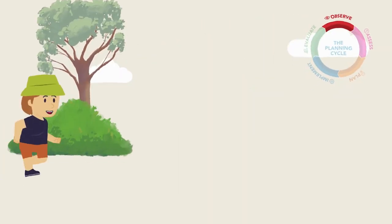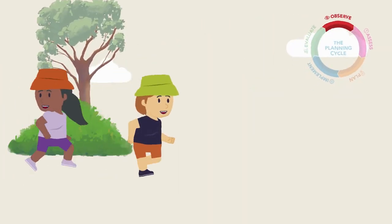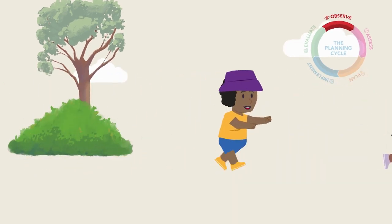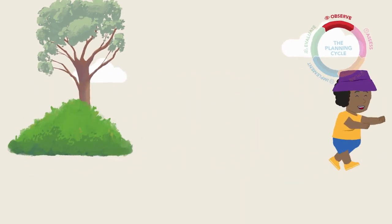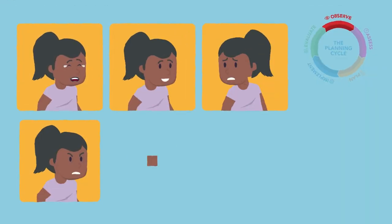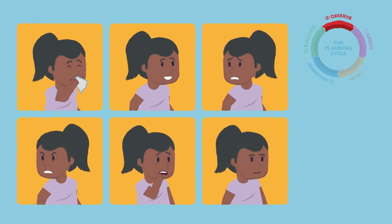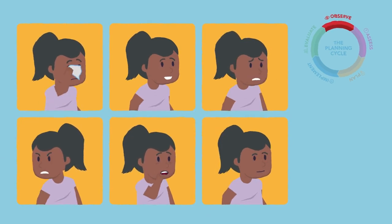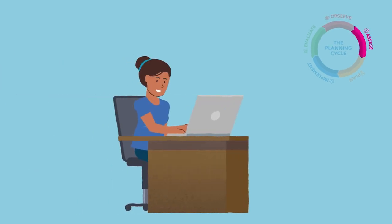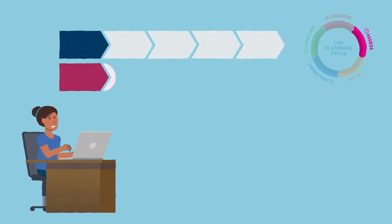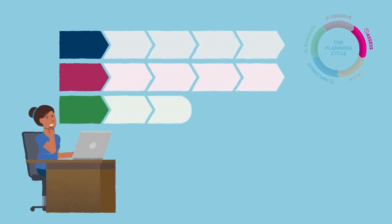An educator or teacher observes a child's emotional responses during play over the course of a week. They observe that the child shows a wide range of emotions and is starting to describe and express their feelings with words. The educator or teacher refers to the learning trajectories to assess the learning and to identify the indicator that best describes the child's skill.